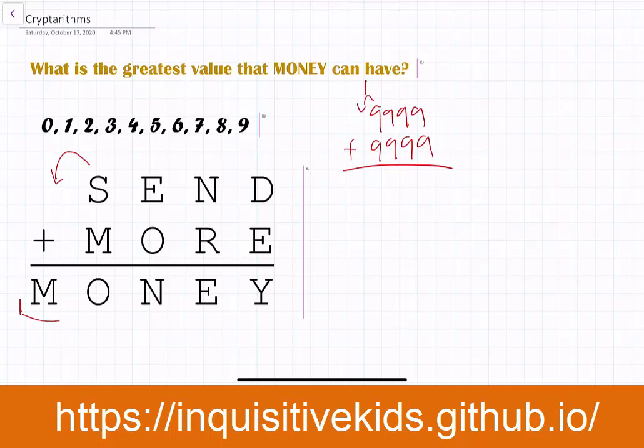The greatest digits — 9 — added together can only carry a maximum of 1. So now we know that M equals 1.